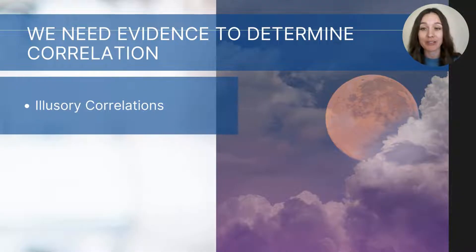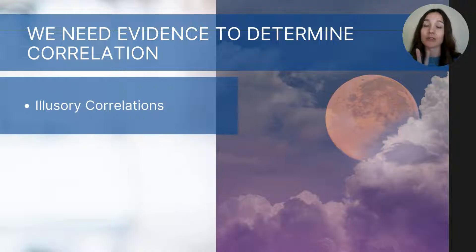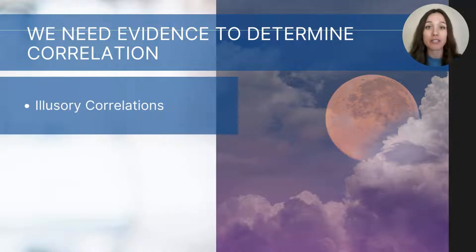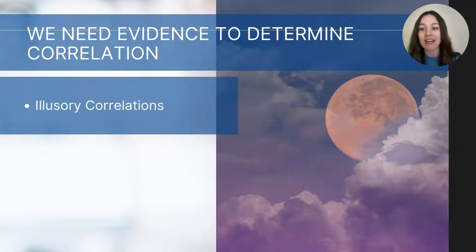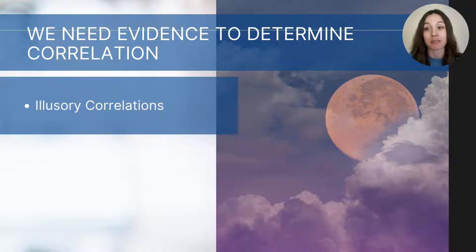Despite widespread popular belief, numerous scientific studies have found no consistent evidence to support this claim. You could test this claim by taking two variables — nights with full moons and behavior incidents, such as discipline incidents at school — and tracking whether those numbers increase or decrease together. But this particular example is a perceived relationship not supported by correlational studies. Cognitive biases like the confirmation bias can create the illusion that there's a correlation when there is none, leading people to believe in false associations like full moons and unusual behavior.